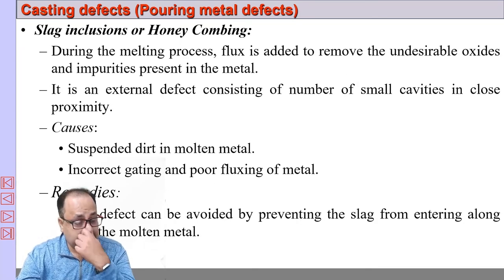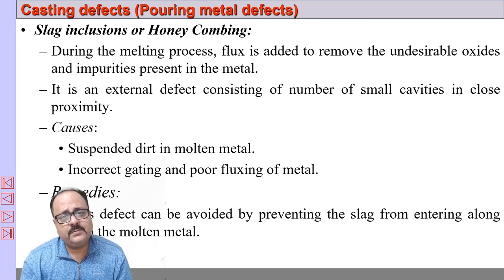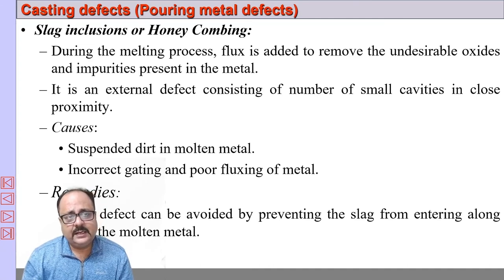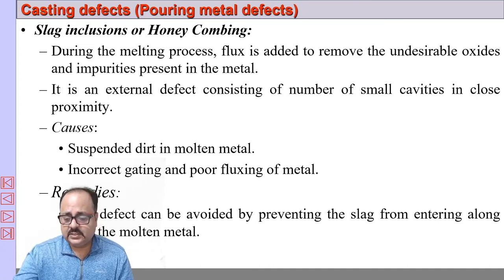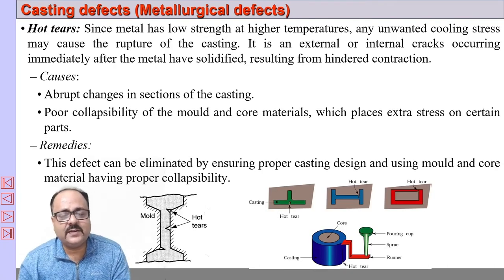Slag: if the gating system or melting process is not proper, slags may enter the mold cavity, creating a defect called honeycombing and slag inclusions. This is another defect that can be very easily avoided.